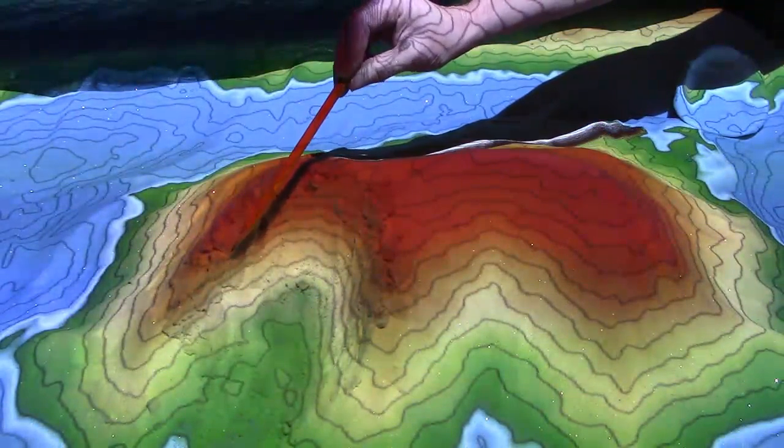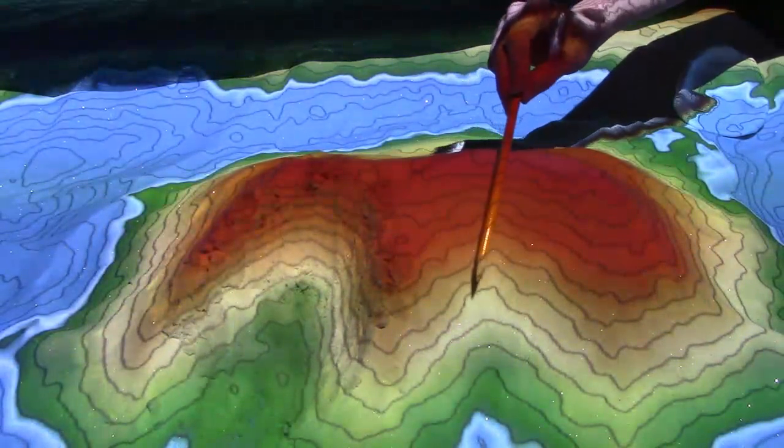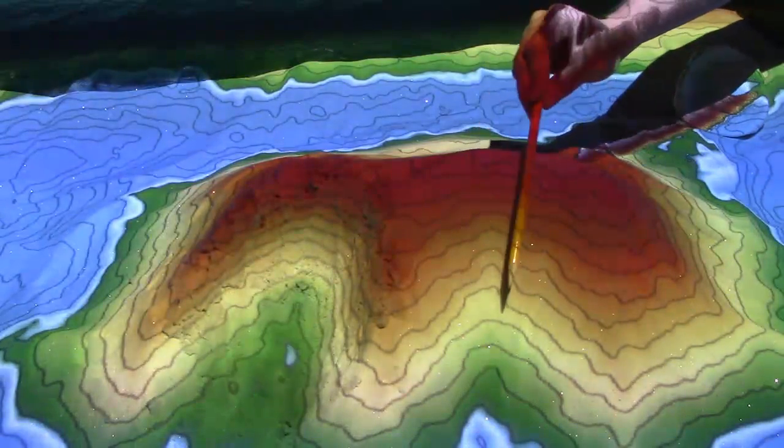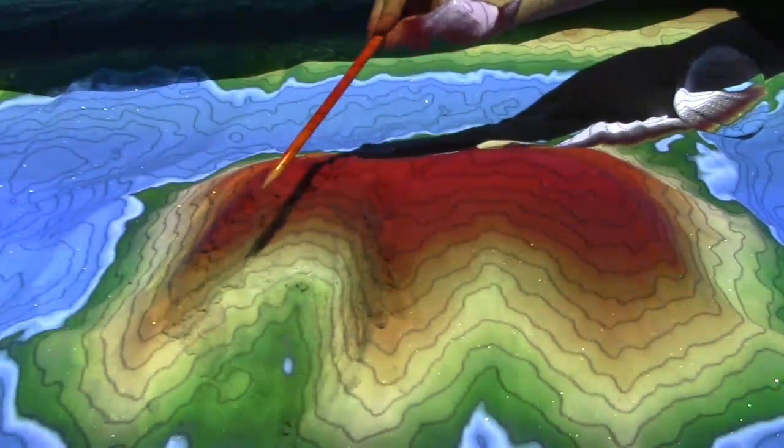So glacial valleys: steep sides, flat bottom, the letter U. River valleys: evenly spaced contours both on the sides and in the bottom, forming like the letter V. A river valley is V-shaped and a glacial valley is U-shaped.